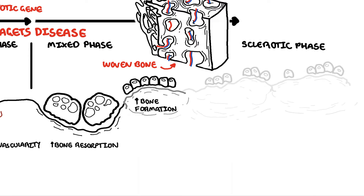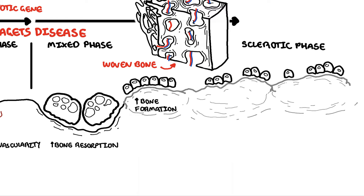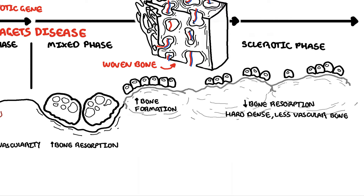The final phase is the sclerotic phase. Here, you have a decrease in bone resorption and an increase in osteoblastic activity. In the sclerotic phase, the osteoblast forms hard, dense, less vascular bone. The sclerotic phase is also known as the burnt-out phase of Paget's disease.